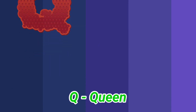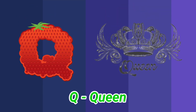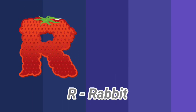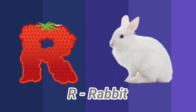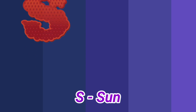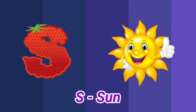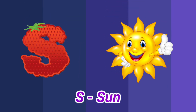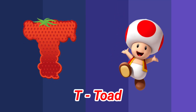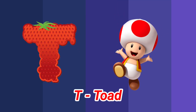Q is for queen, k-k-queen. R is for rabbit, r-r-rabbit. S is for sun, s-s-sun. T is for toad, t-t-toad.